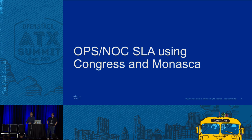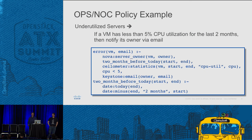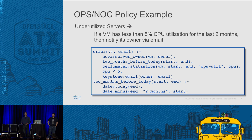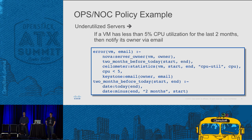Let's look at the different capabilities we can implement using a combination of Monasca and Congress. The first aspect is ops NOC SLA. I have this example taken from the Congress documentation — it's a policy that looks at the utilization of a server or VM and says: if utilization for the last two months is less than a certain amount, then you are not really using it, so I'm going to send you an email because you'll be on the wall of shame — you requested all these resources and haven't really used them.